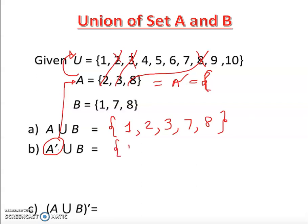So A complement is one comma, four comma, five comma, six comma, seven comma, nine comma, ten. And I'm doing union. So what is B? Let's take a look here. B is one comma, seven comma, eight. Now I'm ready to find my answer.